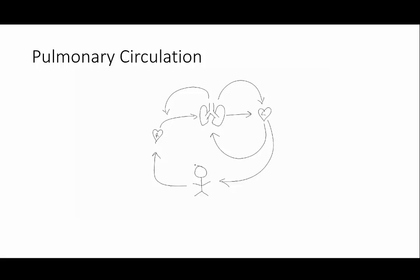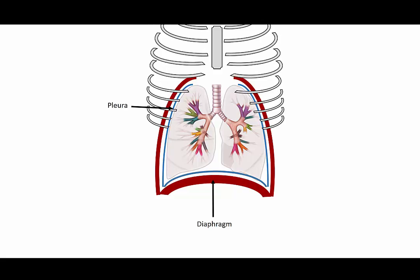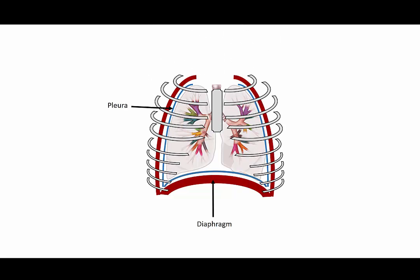To end this section, I would like to mention a few of the extrapulmonary components of the respiratory system. These are the pleura, the diaphragm, and the chest wall, which is made up of the ribcage and intercostal muscles. These structures play an important role in respiratory mechanics in both health and disease.